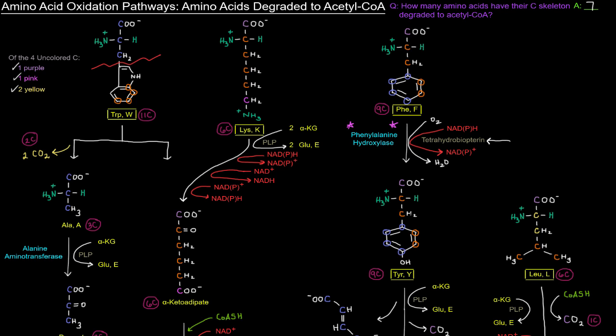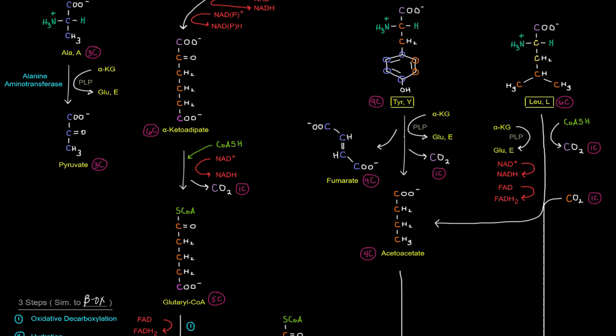So we're going to go from phenylalanine, nine carbons, to tyrosine with still with nine carbons, just with this OH group after that phenylalanine hydroxylase reaction. And then with this tyrosine, four of the carbons, these four blue ones, will come off as a fumarate.